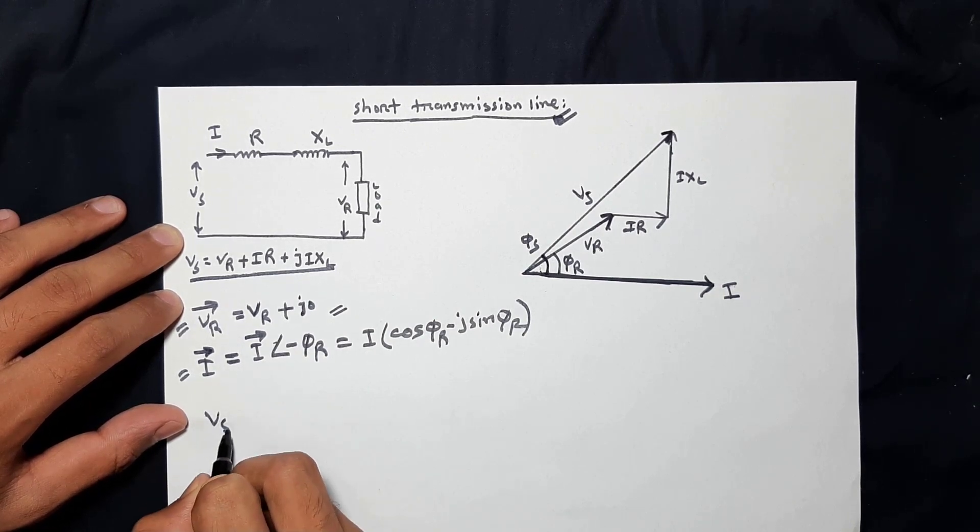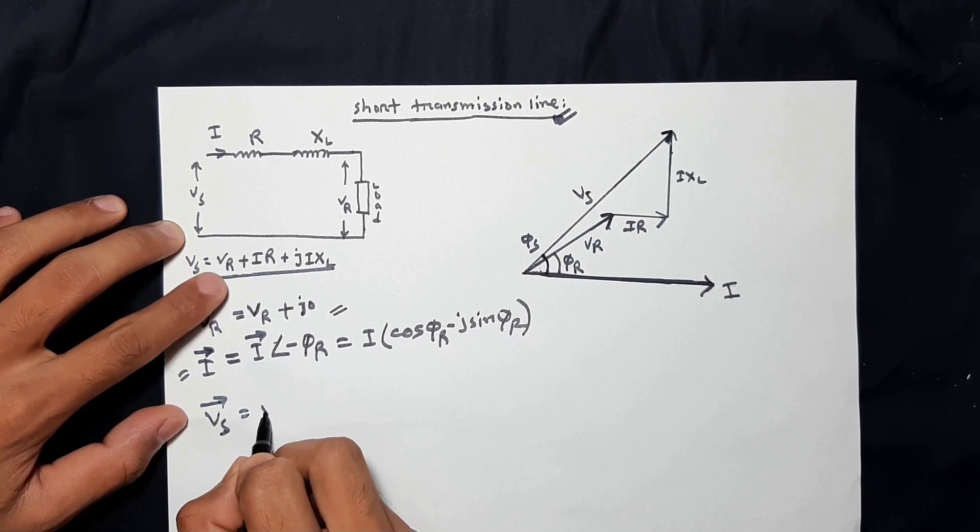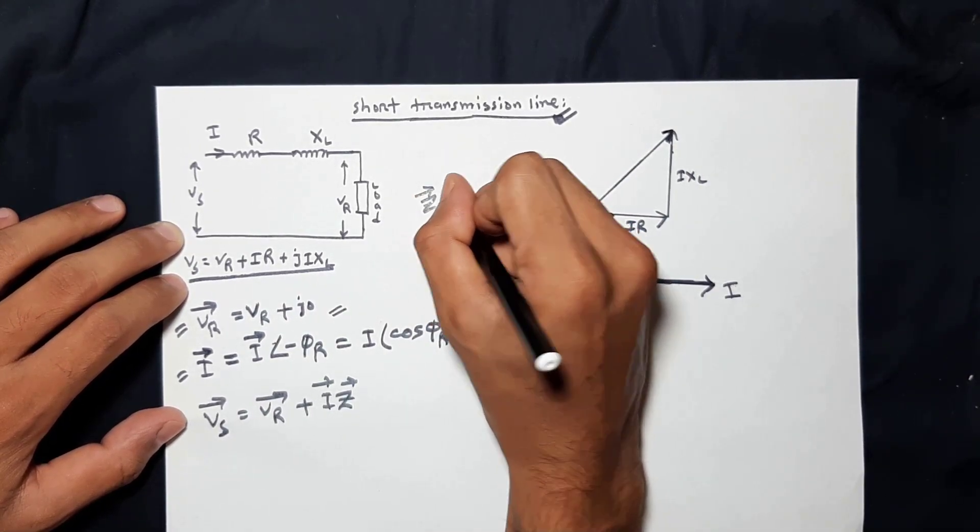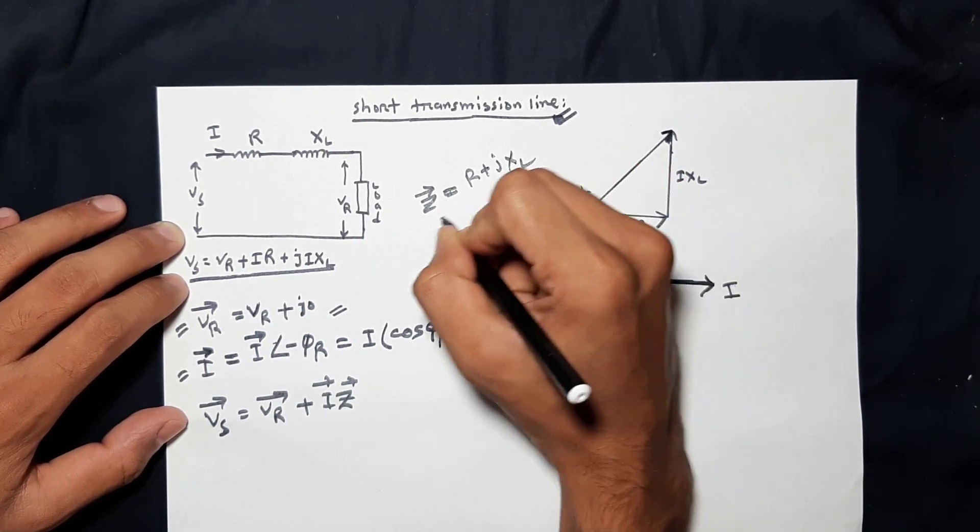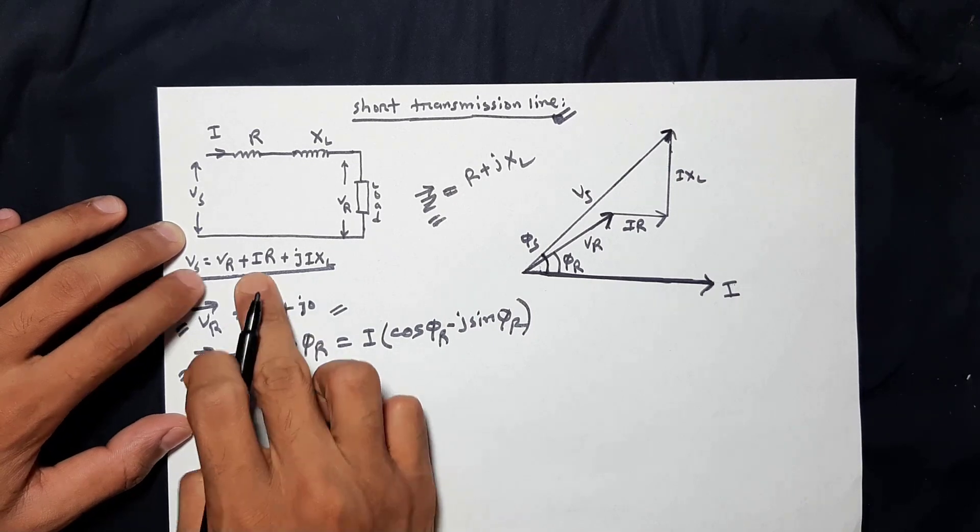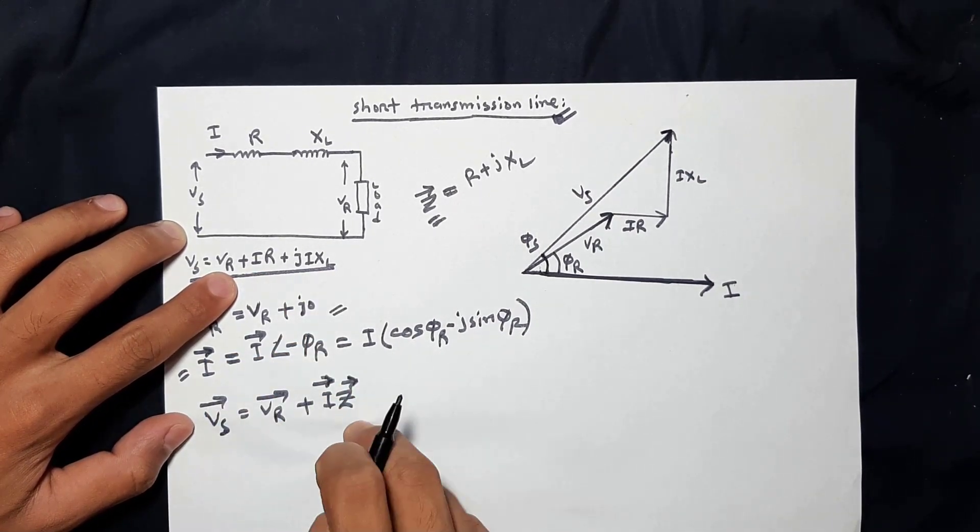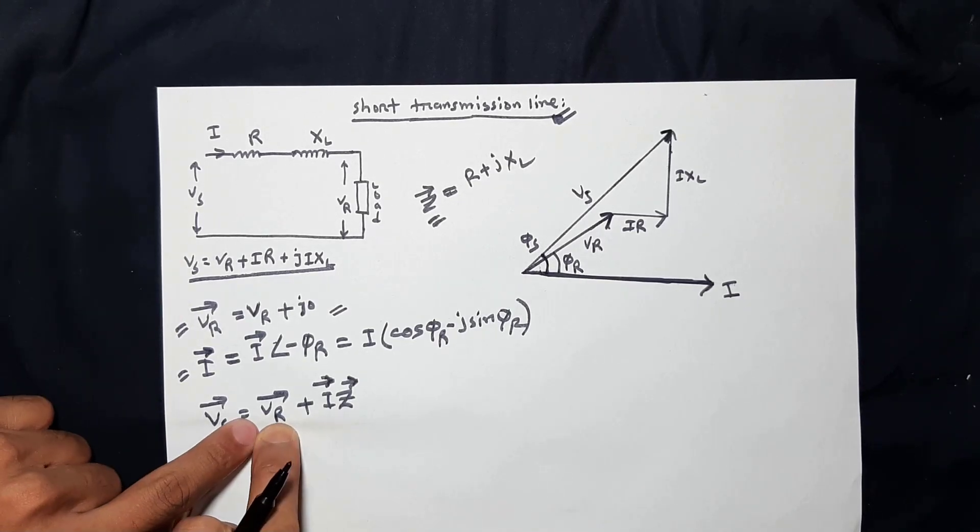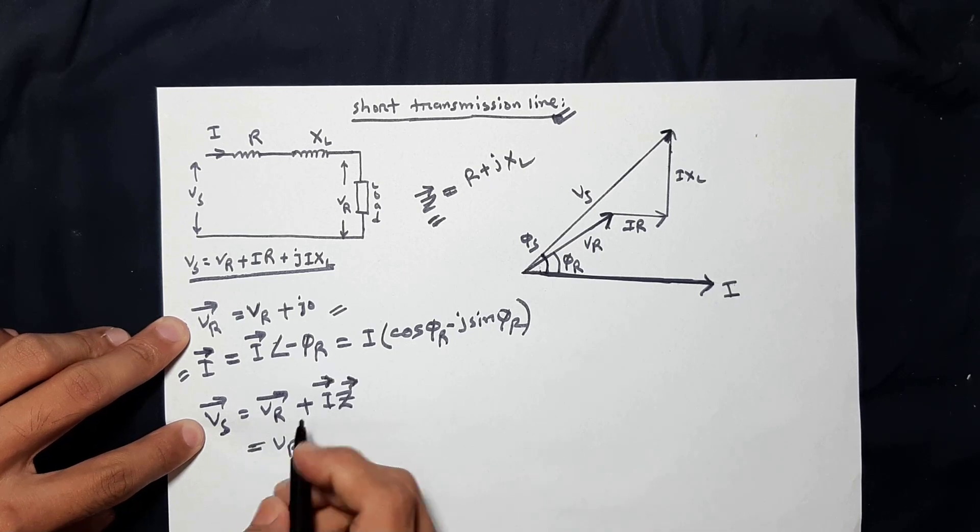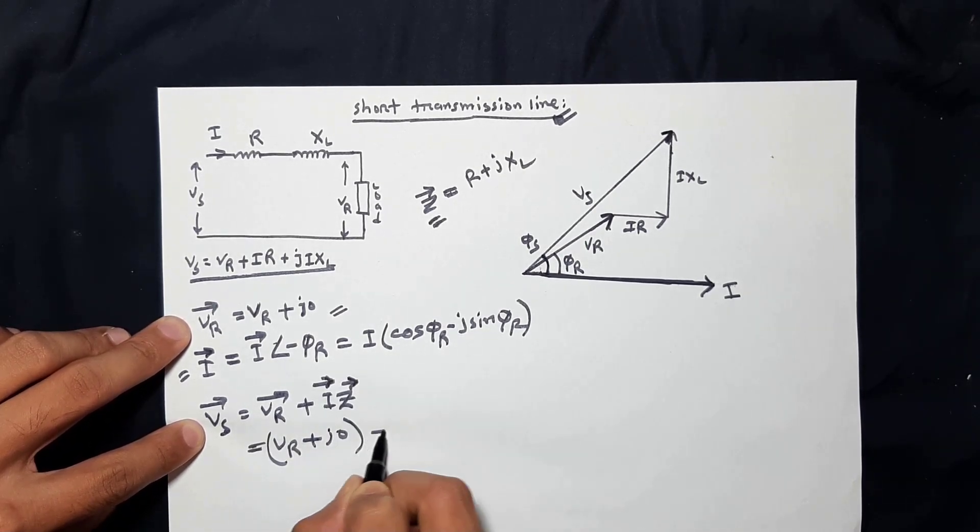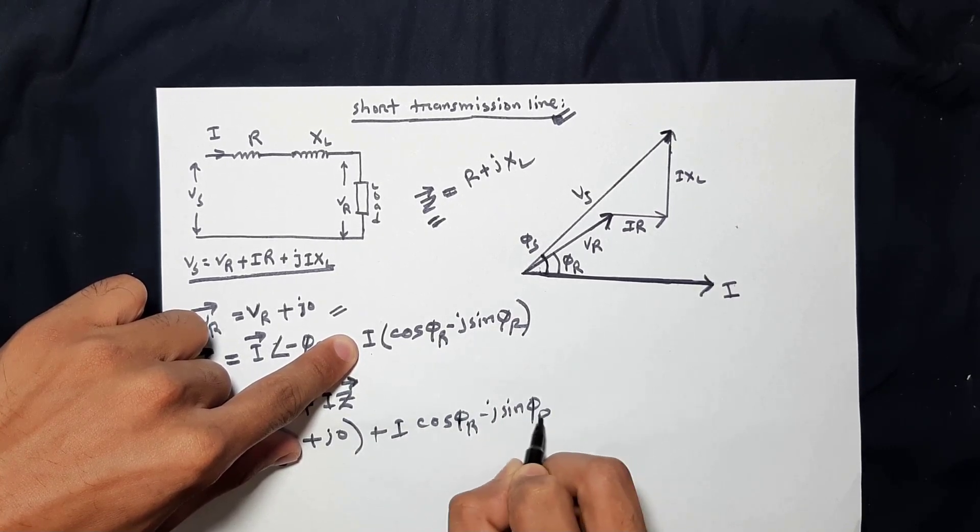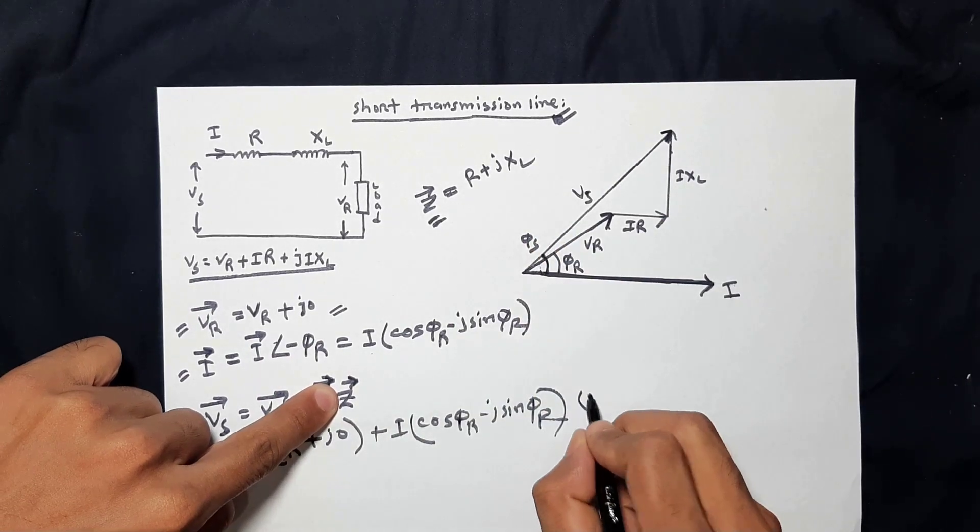The sending end voltage. Simple Vr vector plus I Z. Simple Z. Z vector is r plus j xl. Z is impedance, r plus j xl. Then, if I put the value to Vr, I can use Vs with magnitude. Vr plus j0 plus I vector value. That means I cos phi minus j sin phi into Z. Z vector r plus jxl. Very simple.